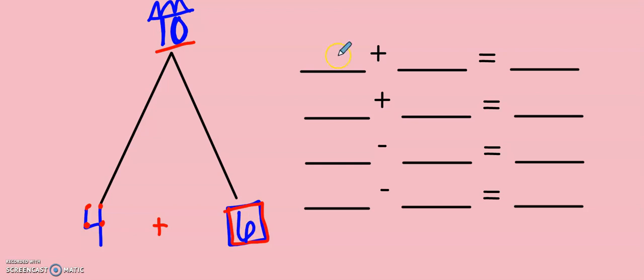Let's go ahead and make our four equations to finish this up. Now, I need two numbers to add to give me my total. What two numbers do I add again? 4 plus 6. 4 plus 6 is 10. Now, do you remember that little trick on how to do one more addition equation? That's right. I'm going to flip-flop my numbers. Instead of 4 plus 6, let's do 6 plus 4. That also gives us 10.